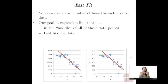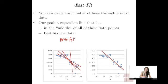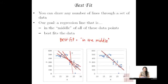So what does it mean to best fit the data? You could think about it like this: there are any number of lines you could draw through a set of data. There are an infinite number of possible lines. But our goal is a regression line that is sort of in the middle of all of these data points. That's what we mean by best fitting line — best fit is roughly equal to the concept of being in the middle.